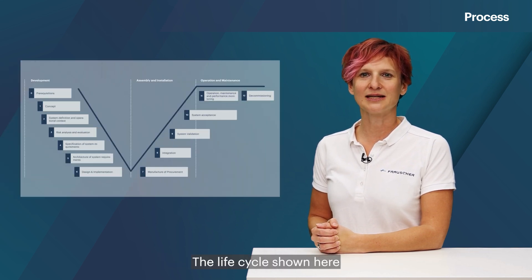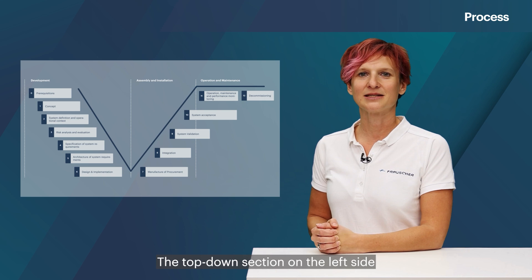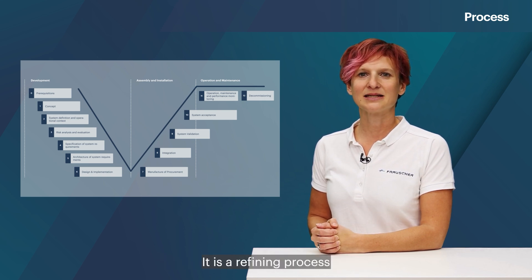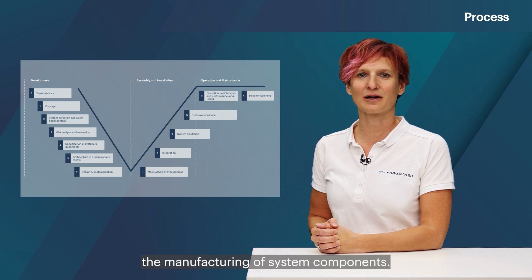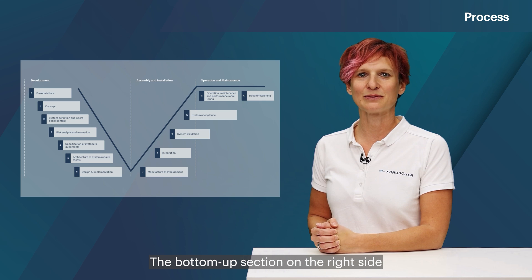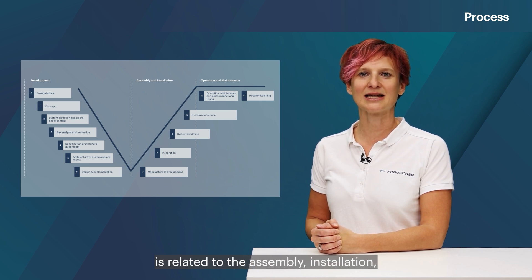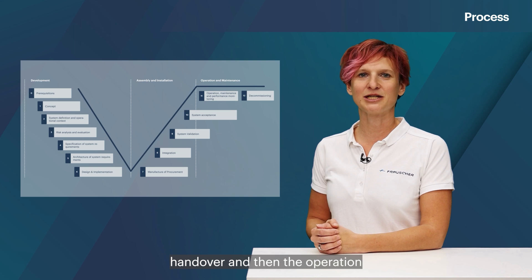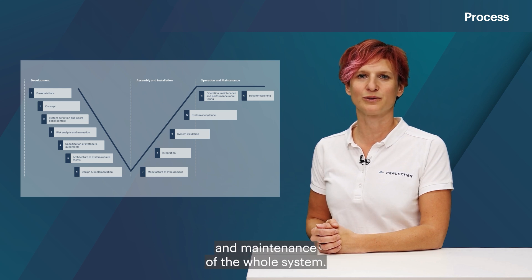The life cycle shown here has a V-shaped representation. The top-down section on the left side is generally called development — it is a refining process ending with the manufacturing of system components. The bottom-up section on the right side is related to the assembly, installation, handover and then the operation and maintenance of the whole system.